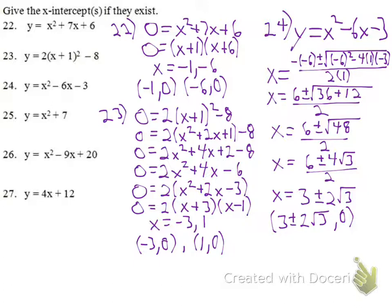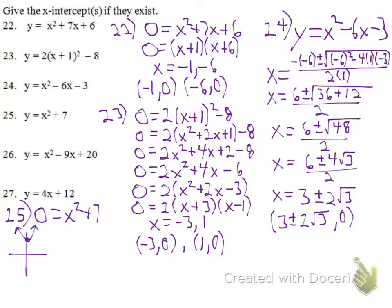For number 25, we have 0 equals x squared plus 7. In vertex form, this tells us the vertex is at 0, 7 and it opens up — so it actually doesn't have any x-intercepts because the parabola never crosses the x-axis. If we tried to solve this, it would not give us a real solution — it would give an imaginary solution. So the answer is no x-intercepts.